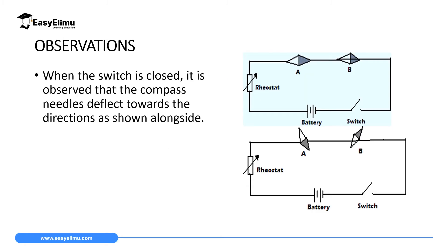Remember, a compass needle has a north pole where it is colored, and a south pole where there's no color. In this case, this is the north pole and south pole. Compass needle A is above the wire, and this one is below the wire. Now when you switch on the switch, what will happen? The compass needle which is above — the north pole will point downward, like in this case here. So this one — the one which is above — it will point downward.